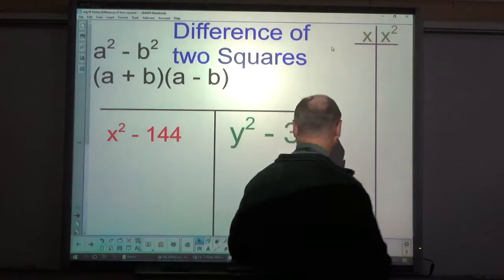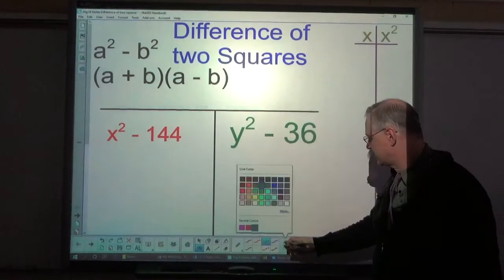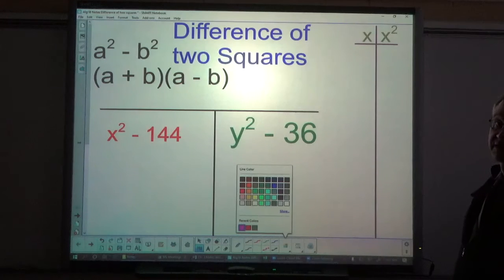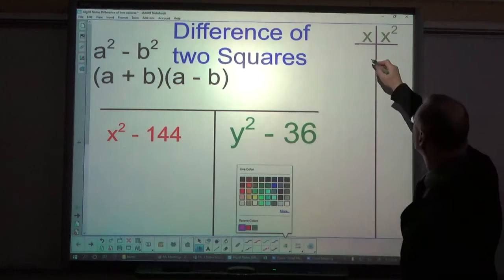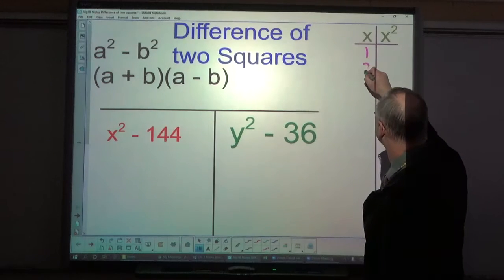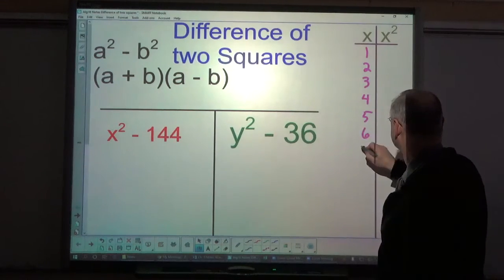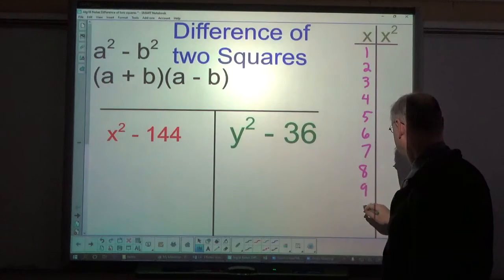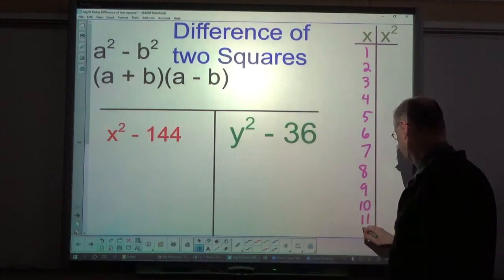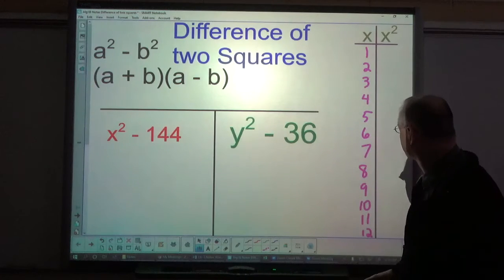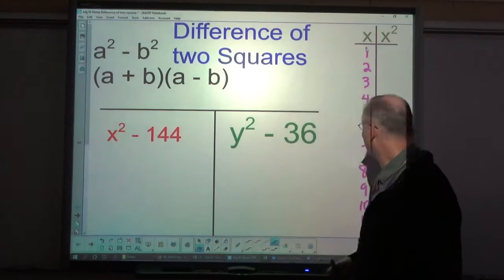One thing you will want to have in your list here is you're going to want a list of all the perfect squares, at least up through 12. So you might want to say 1, 2, 3, 4, 5, 6, 7, 8, 9, 10, 11, 12. I got short at the bottom there.